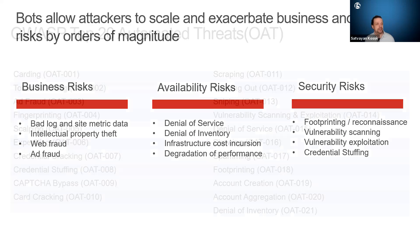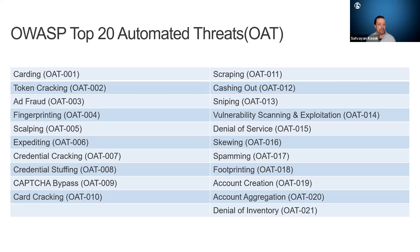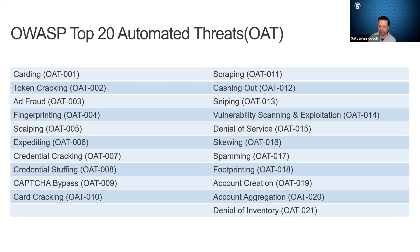Here's the OWASP Top 20 Automated Threats. This is the stuff you'd expect — denial of service, footprinting, spamming, snipping. If you have any specific questions about this, you can reach out to us now or later and we can talk a little bit more about it.